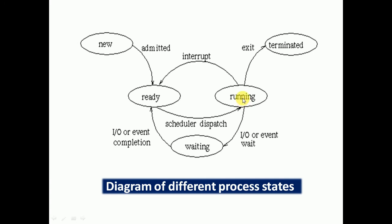When the process is in the running state, if there is any problem or interrupt, it goes back to the ready state. From the running state, if the process needs to wait for input/output devices or any event, the running state transitions to the waiting state. When the input/output device becomes available or the event occurs, the waiting state process becomes ready again.